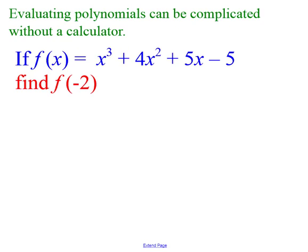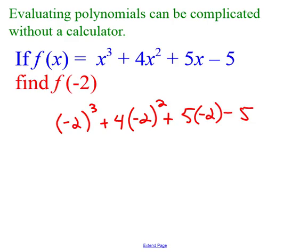We're going to start with this idea that evaluating a polynomial can be kind of complicated if you do not have a calculator. So just to highlight this, I want you to pause the video and try and find f of negative 2 for this function. If you're back, hopefully you do negative 2 cubed, 4 times negative 2 squared, plus 5 times negative 2 minus 5. And that gives me negative 8 plus 16 minus 10 minus 5.